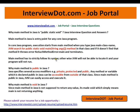The main method has to strictly follow its syntax, otherwise the JVM will not be able to locate it and your program will not run. Java specifies several access modifiers — private, protected, public. Any method or variable declared public can be accessible from outside the class, so the JVM can access it as well. That's why we mark it as public. If you mark it private or protected, it will say NoSuchMethodError.